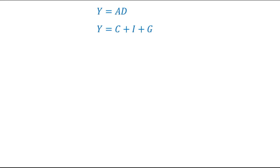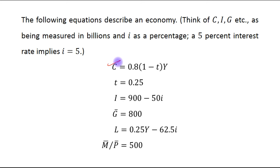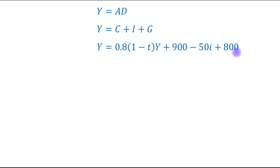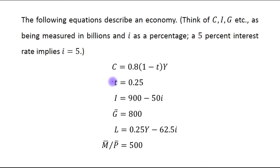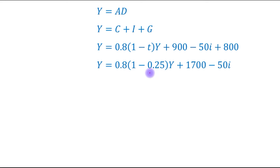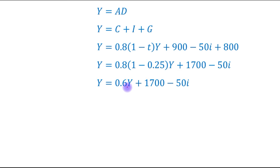We have been given the consumption function, investment function, and government expenditure, so in the next step we will write Y equals to the consumption function, investment function, and government expenditure. The tax rate is given as 0.25, so in the next step we will incorporate 0.25 at the appropriate place.